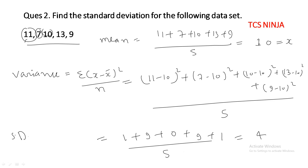The standard deviation (SD) equals the square root of variance. The square root of 4 is 2, so the standard deviation for this data set is 2.